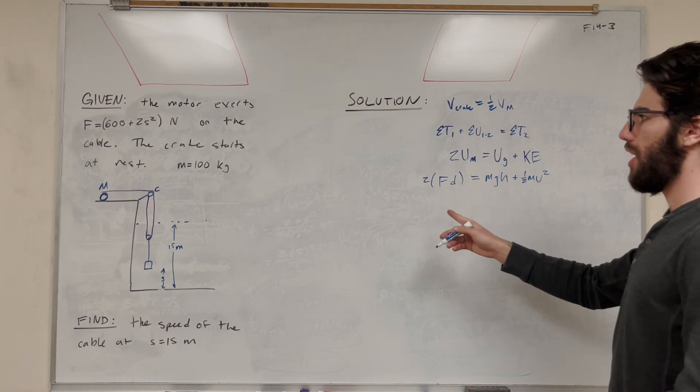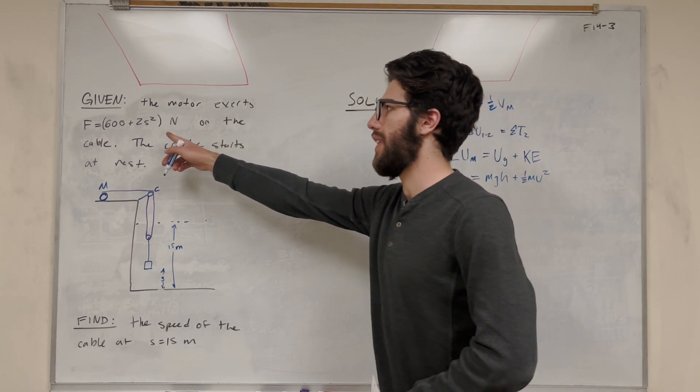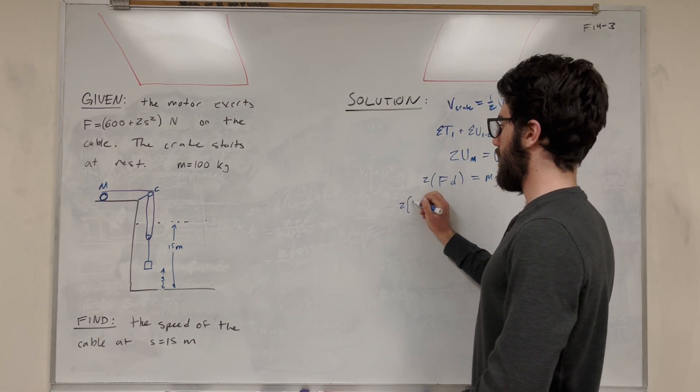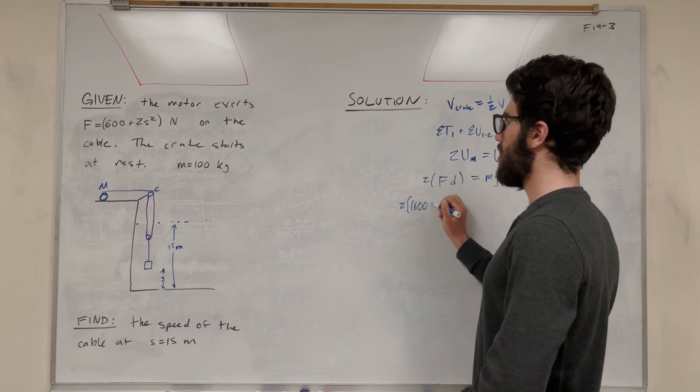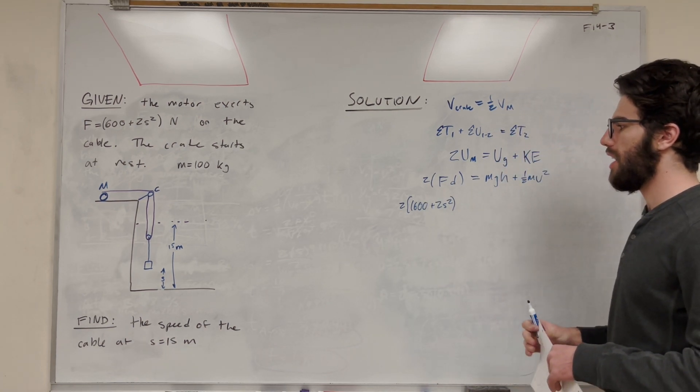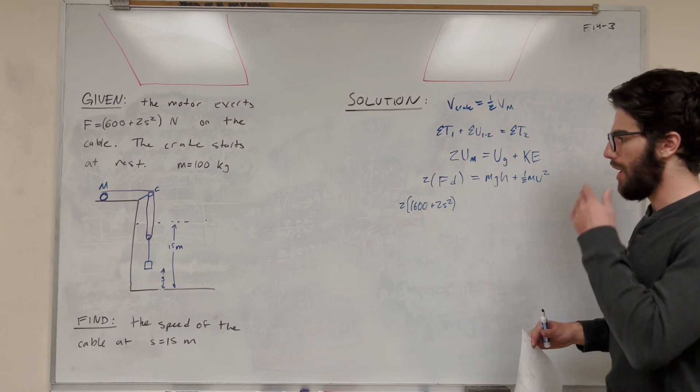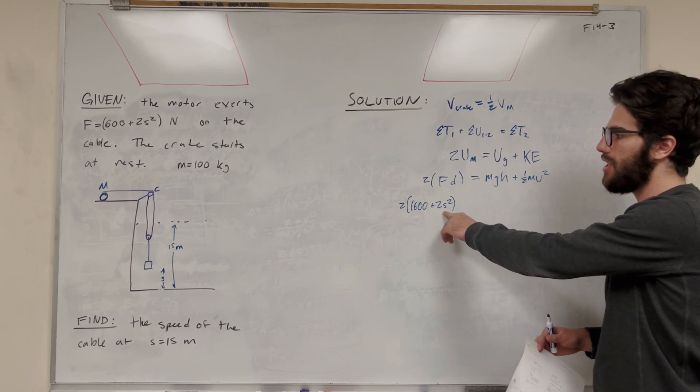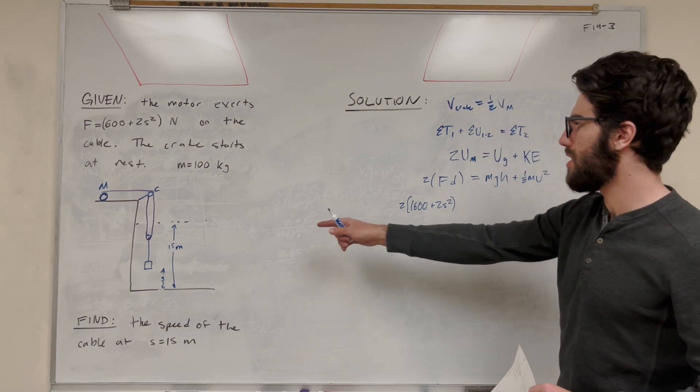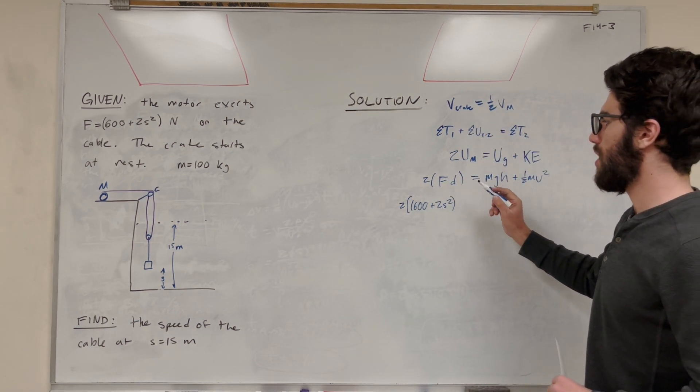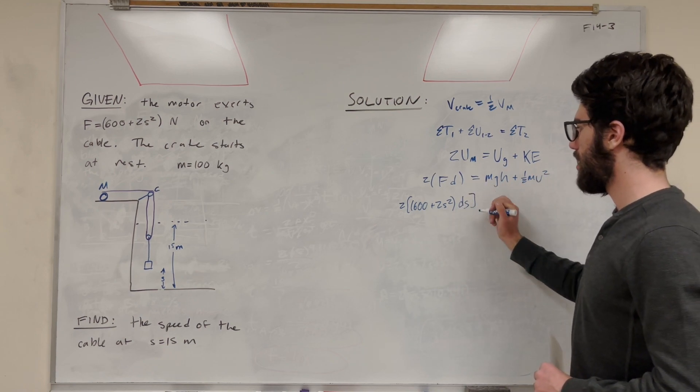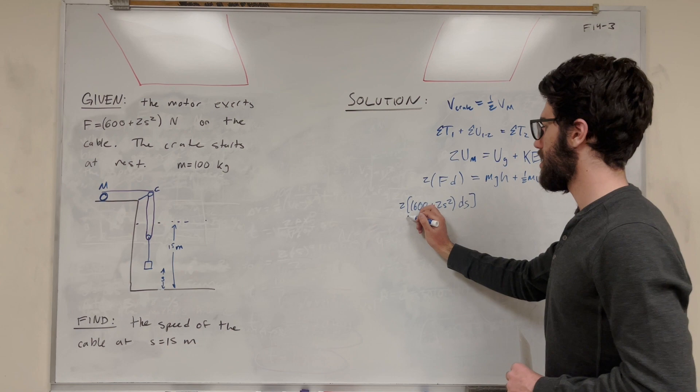So let's expand this part more. We know what force is equal to in terms of s, so we can label this 2. And so that's going to be 600 plus 2s squared. And then we have distance, but we're taking an infinitesimal. We have an s in this equation, so we're going to need to do some sort of integration to find the total force it applies over that distance. So instead of using distance, we're going to use ds, change in position.